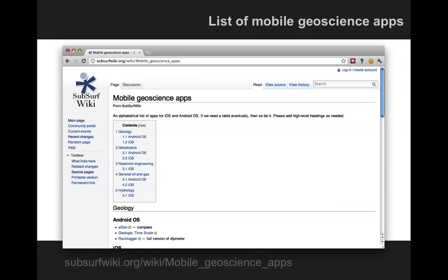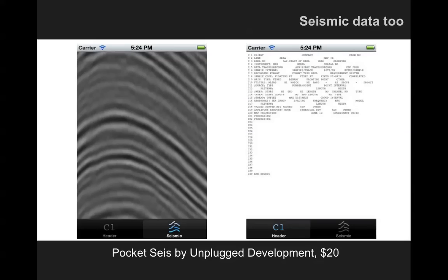Now, we keep a list of mobile geoscience apps that we know about on subsurfwiki.org. Please check it out if you're interested in trying some pieces of software, or if you know about any others, please add them. It's a wiki you're welcome to edit that page. Here's a piece of sort of seismic-oriented software that I know about on iOS. iPhone and iPad, it's called Pocket Size. It's 20 bucks. I haven't actually tried it out. I think the price is a bit steep for the functionality, but I love seeing this stuff out there, so I hope there's more to come.